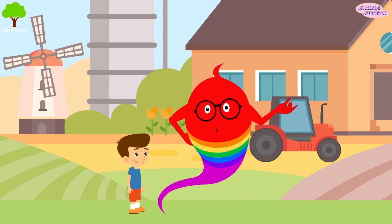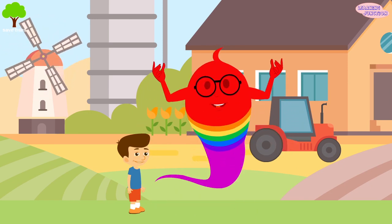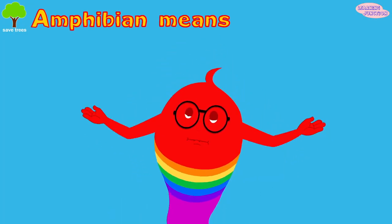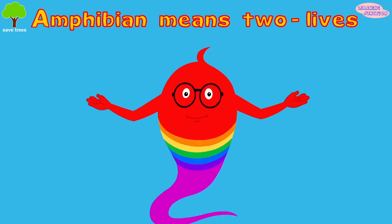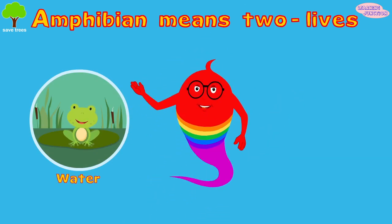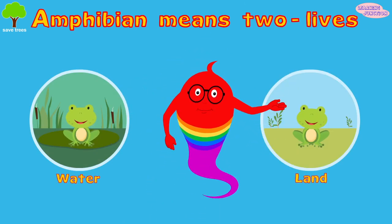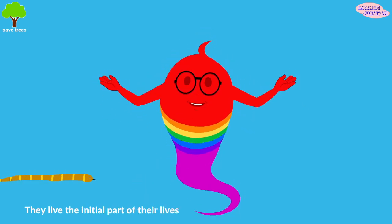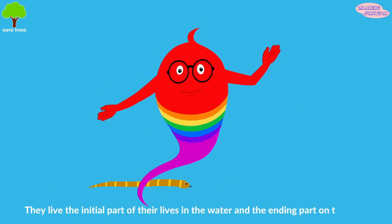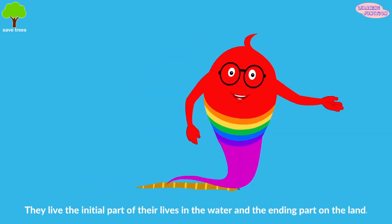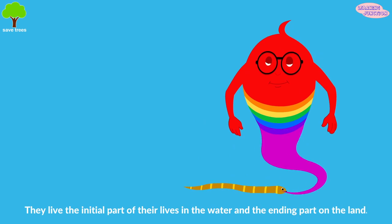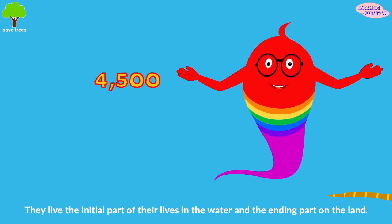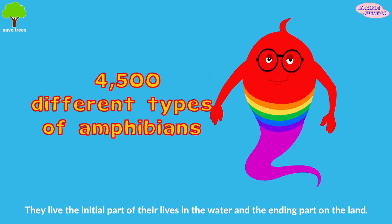Hello friends, today we'll learn about amphibians. The word amphibian means two lives — one in the water and one on land. They live the initial part of their lives in the water and the ending part on the land. There are more than 4,500 different types of amphibians.